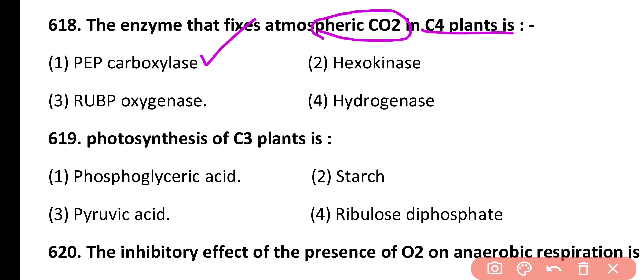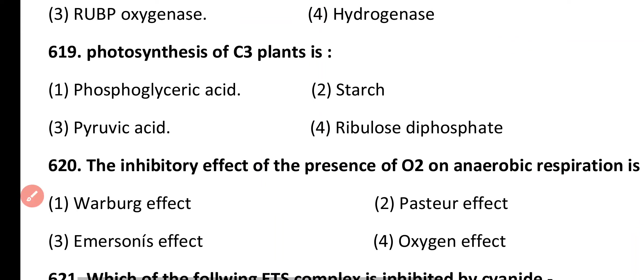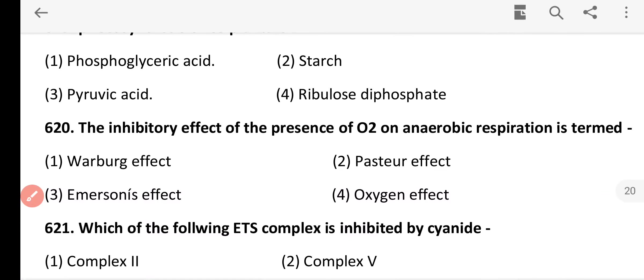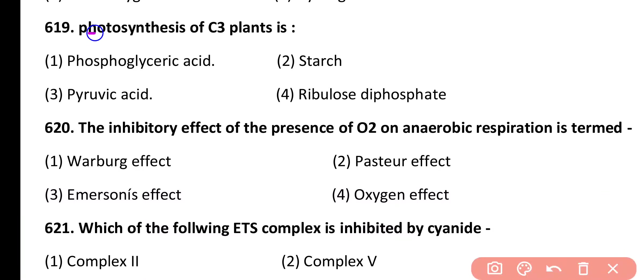Question 619. The first stable product of photosynthesis in C3 plants is: phosphoglyceric acid, starch, pyruvic acid, ribulose diphosphate. Correct answer is option 1. In C3 plants, under photosynthesis, the first stable product is 3-phosphoglyceric acid.